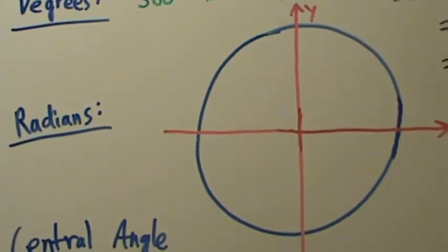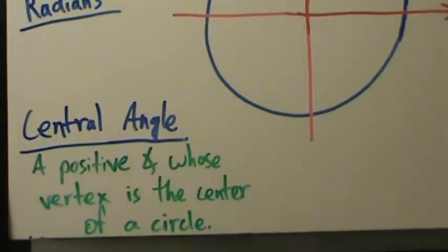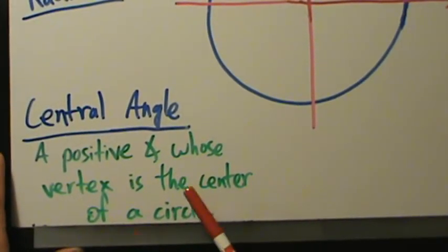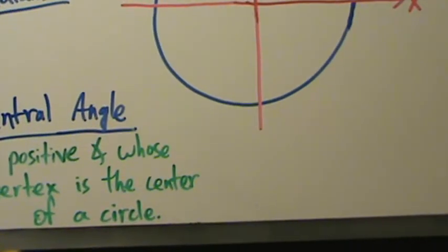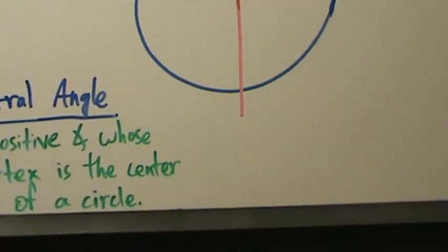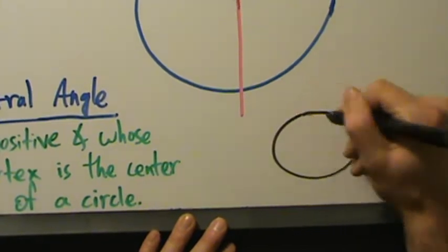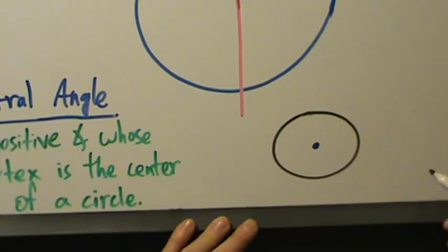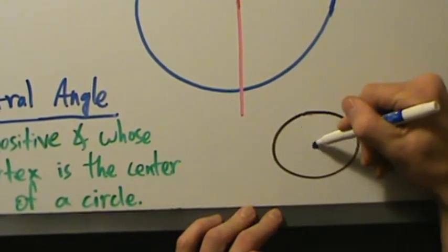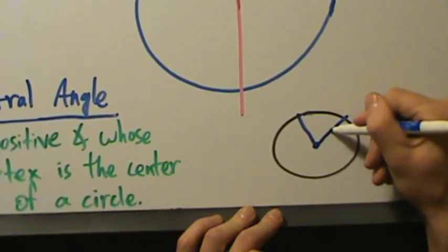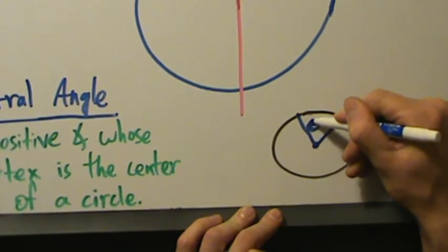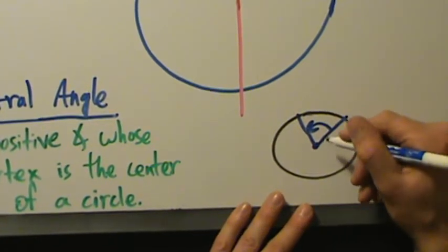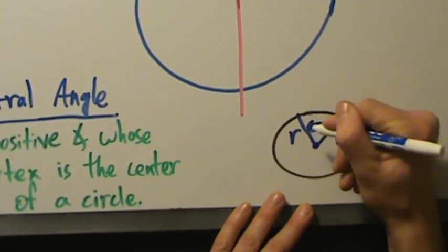Before talking about radians, we need to talk about central angles. A central angle is a positive angle whose vertex is the center of a circle. So if we have a circle and put the vertex at the center, with the angle opening counterclockwise — the positive direction — we have a central angle theta, and the circle has radius r.